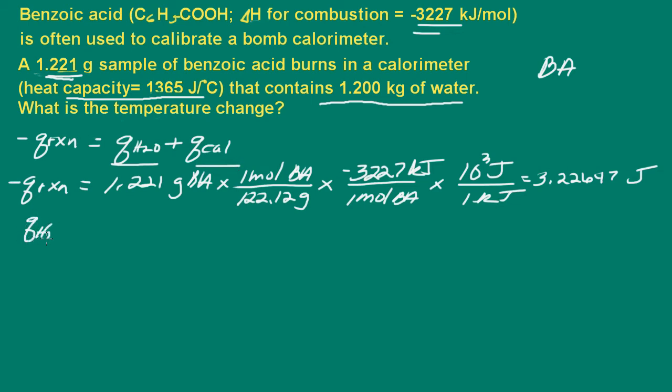The heat absorbed by the water is equal to the specific heat capacity of the water times the mass times delta T. We're being asked to find the temperature change, or delta T. The heat capacity of water is 4.184 joules per gram per degree Celsius times mass. The mass of the water is 1.2 kilograms, which is 1,200 grams.